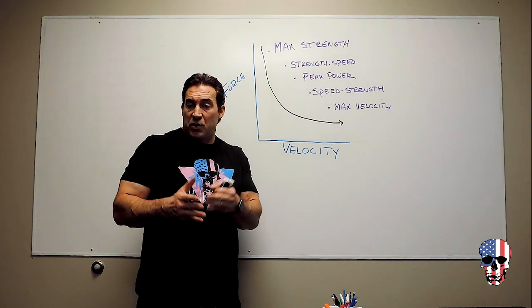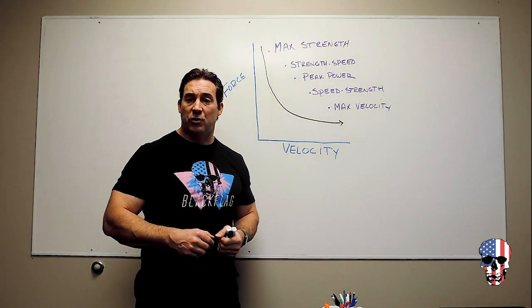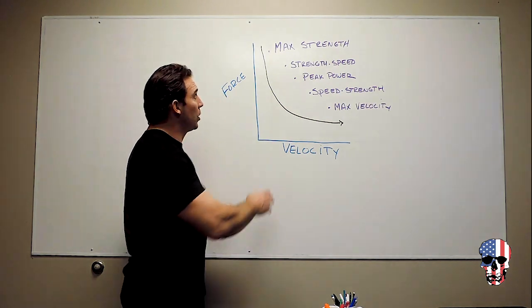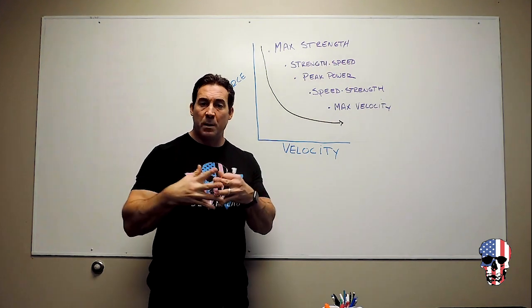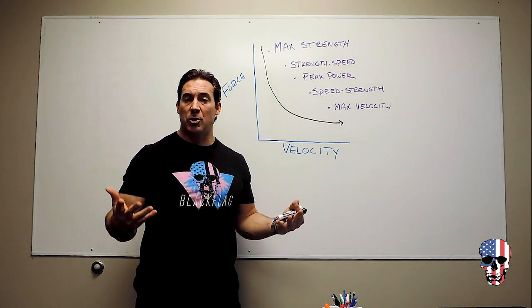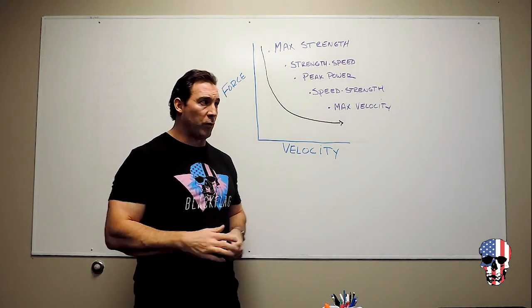So when you're training you'll see percentages at all different ends of the spectrum. The idea being is that we're working both with maximum strength and maximum velocity. When we combine the two, you become a stronger, more athletic, more powerful person.